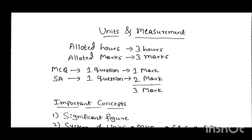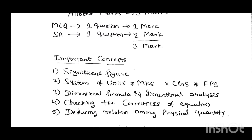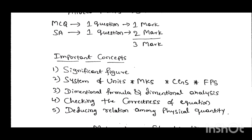From this chapter you are going to get three marks in your annual theory exam. Now I am going to discuss the important concepts. The first important concept is significant figures, and the second one is system of units. In the system of units there are three types: MKS, CGS, and FPS — these are three different measuring units related to length, mass, and time. Next is dimensional formula and dimensional analysis.